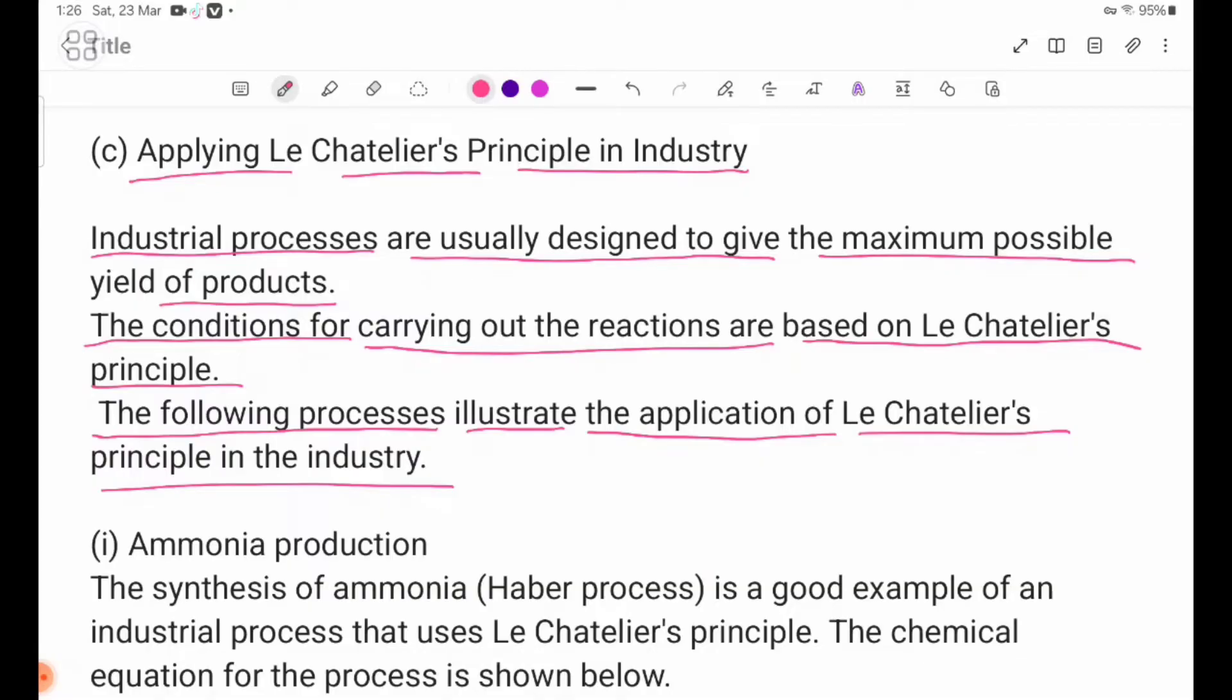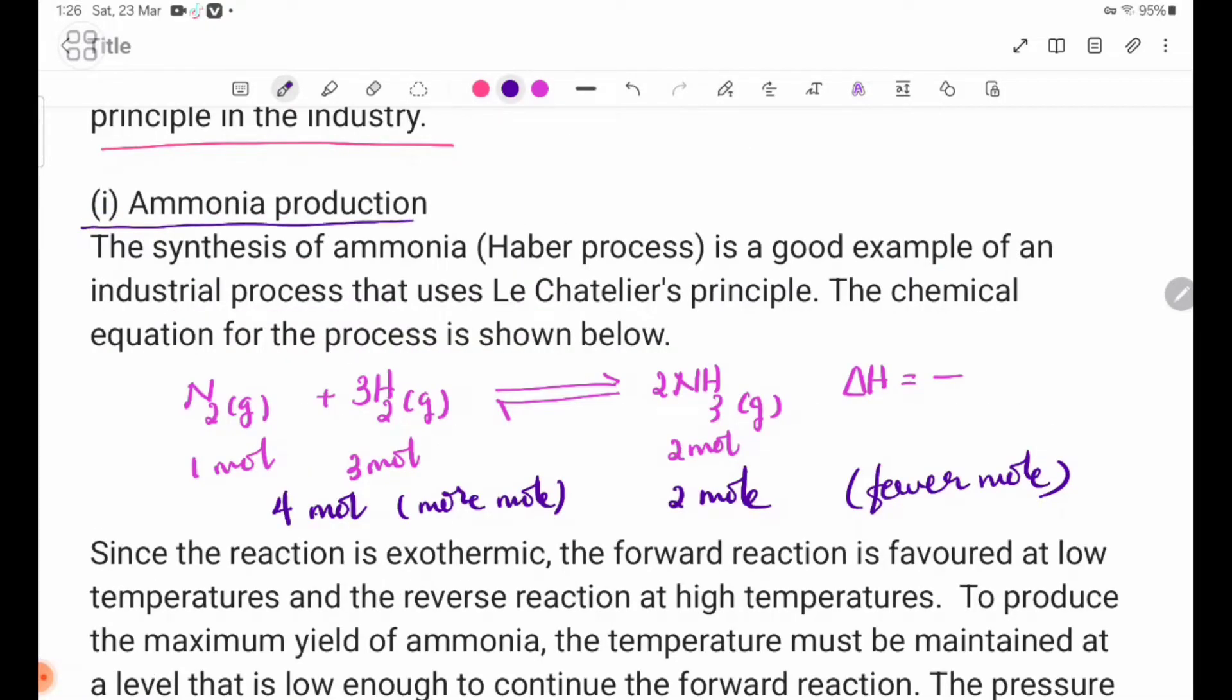Ammonia Production. The synthesis of Ammonia Haber Process is a good example of an industrial process that uses Le Chatelier's Principle. The chemical equation for the process is shown below.